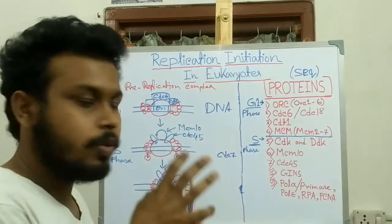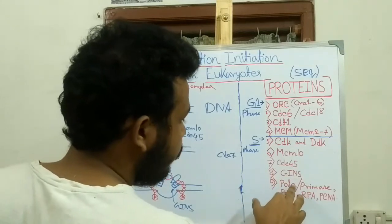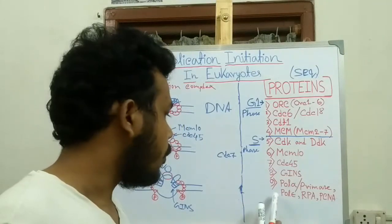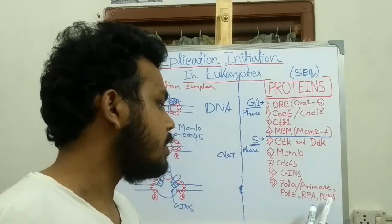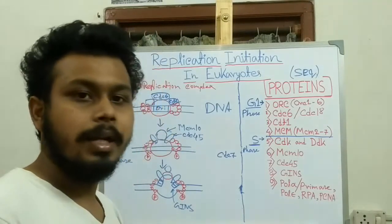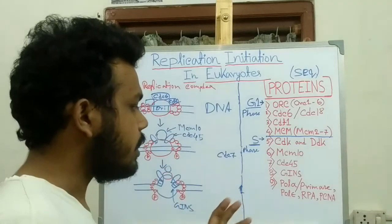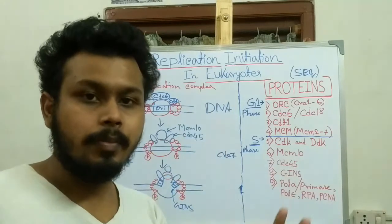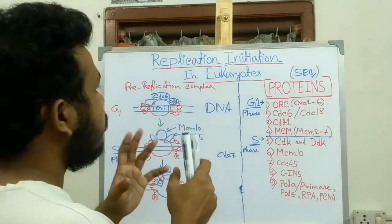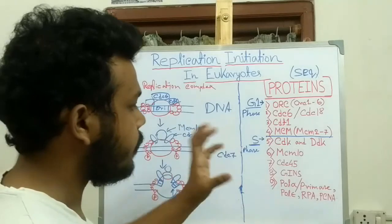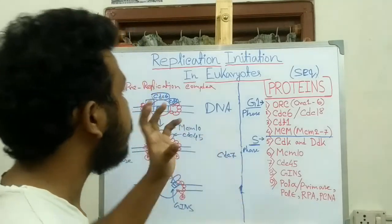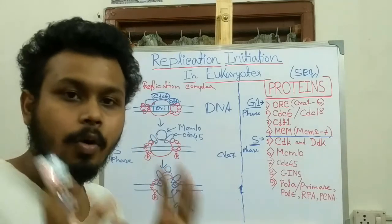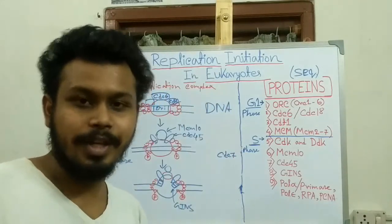CDC45 helps to recruit polymerase alpha-primase, polymerase epsilon, RPA (replication protein A — which is the analog of single-stranded binding protein in prokaryotes), and PCNA. This completes the process of replication initiation in eukaryotes.